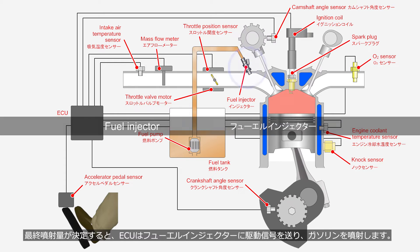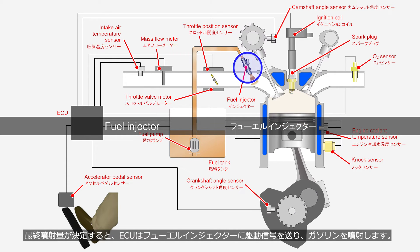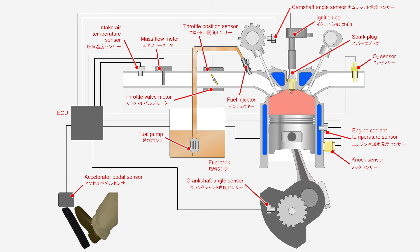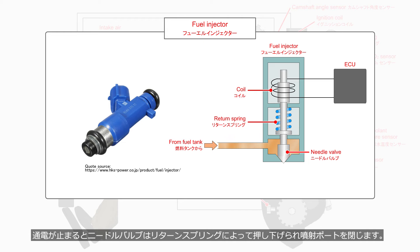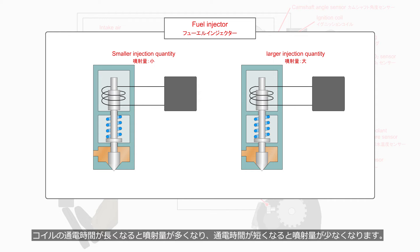When the final injection quantity is determined, the ECU sends a driving signal to the fuel injector. When electricity is supplied to the coil of the fuel injector, the needle valve is lifted to inject gasoline. When the current is cut off, the return spring pushes down the needle valve, closing the injection port. A longer energization time results in a greater injection quantity, while a shorter energization time leads to a smaller injection quantity.